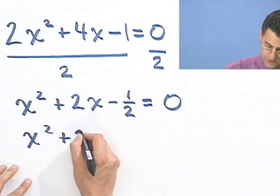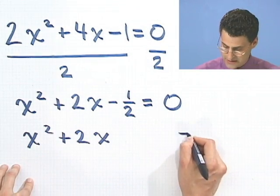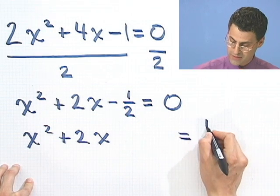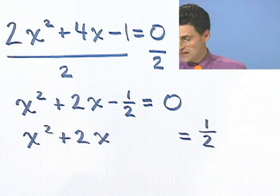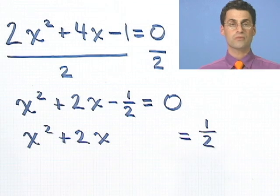x² plus 2x, and I always leave a big space here, and I bring this over, it becomes now a positive of a half. Now what I want to do is add something to both sides. What do I do?